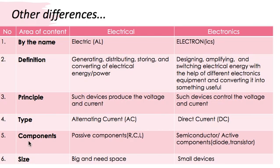Next come the components used in electrical and electronic devices. Electrical devices use passive components like resistors, inductors, and capacitors. Whereas electronic devices use active components like diodes and transistors. These active components work on low voltage, whereas passive components require high voltage. Along with that, electrical devices require more power consumption, whereas electronic devices require very less power consumption.